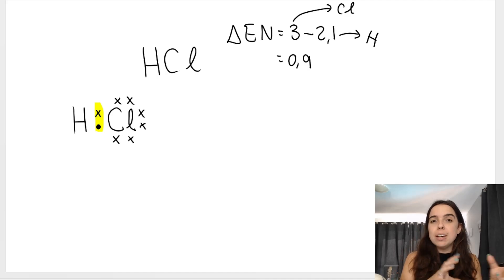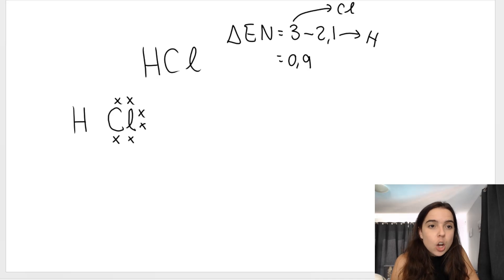Now what that means is the bigger the electronegativity, the stronger that atom is pulling that pair of shared electrons. It pulls the pair of shared electrons closer to it. So actually, technically, what is happening is the shared pair of electrons is in the middle of them because they're sharing it, but it lies a little bit closer to the chlorine and a little bit further away from the hydrogen.